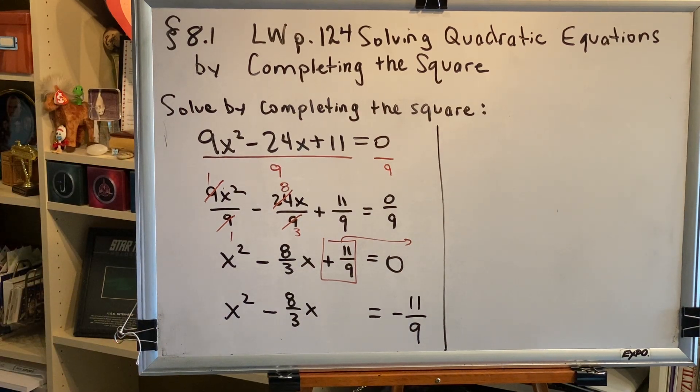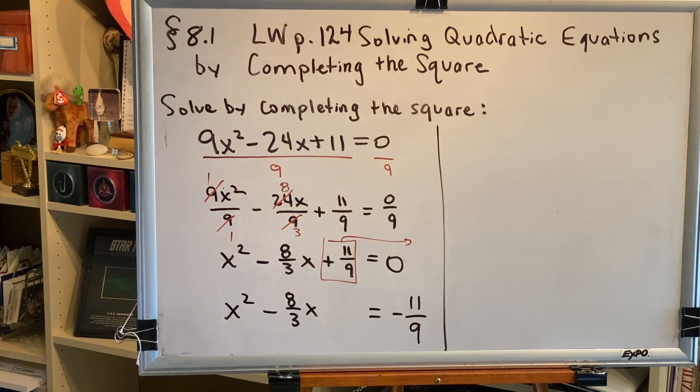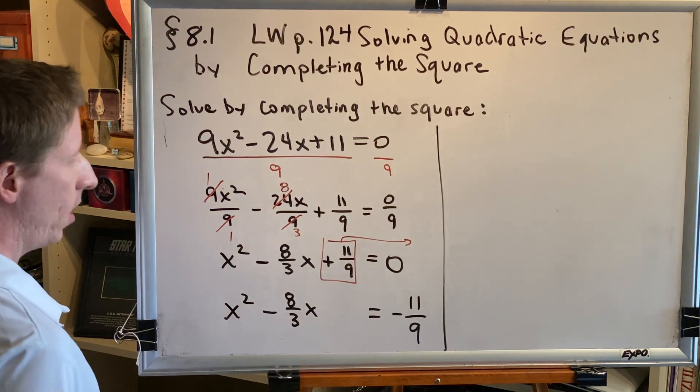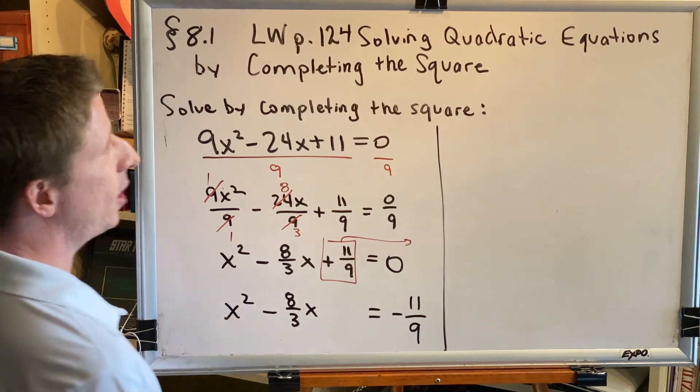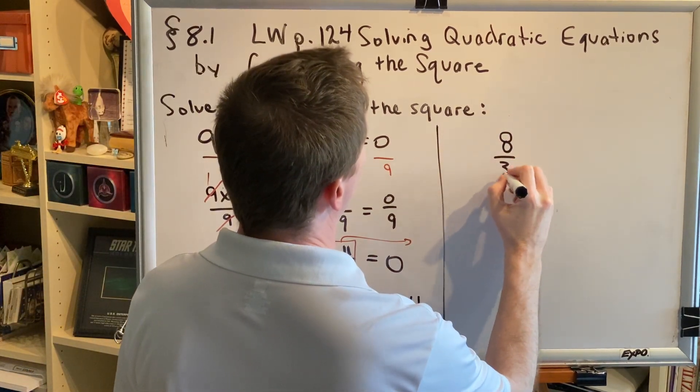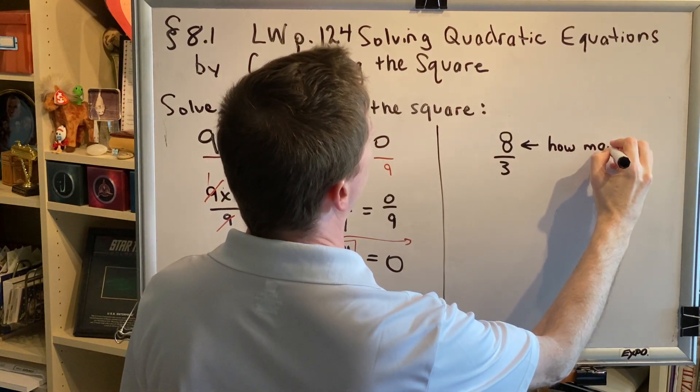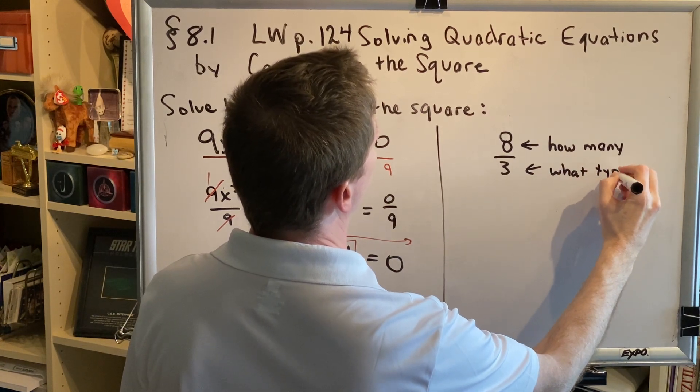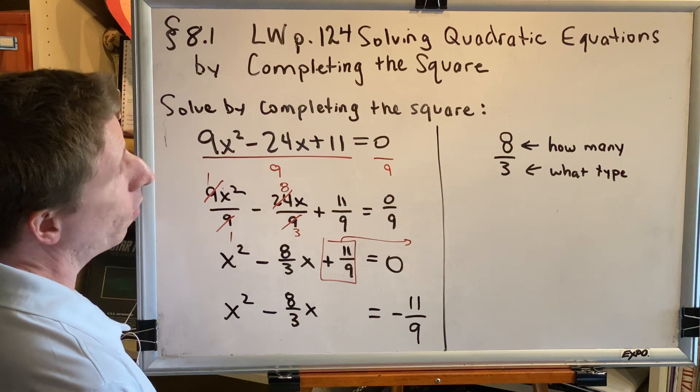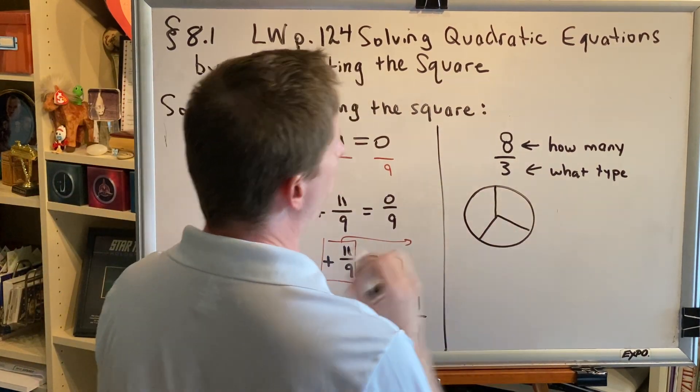Step 3. We're going to add something to this binomial in an effort to turn it into a perfect square trinomial. Now, before we do that, I want to give you just a little bit of information about how fractions work. Let's say you have a fraction like 8 thirds. The numerator tells you how many. The denominator tells you what type. So, let's imagine we're talking about pizza.